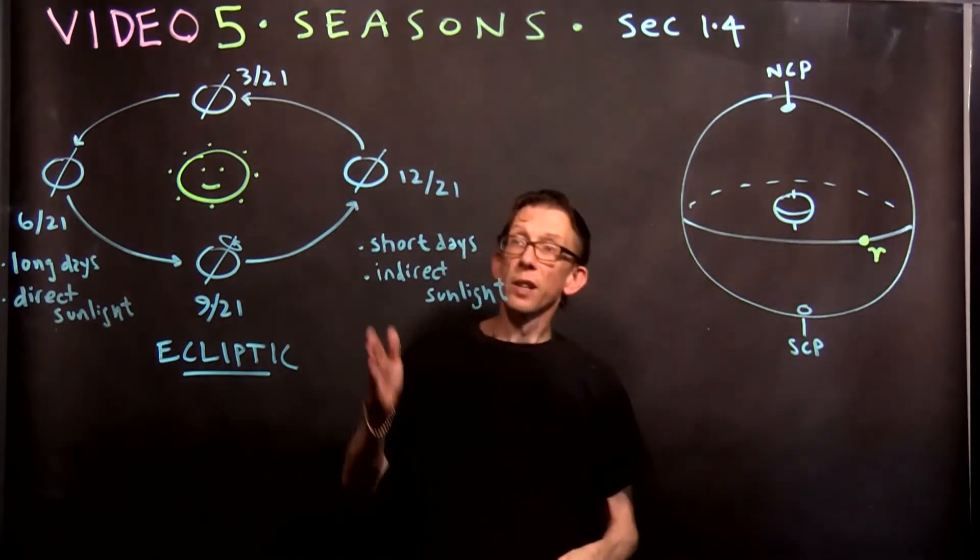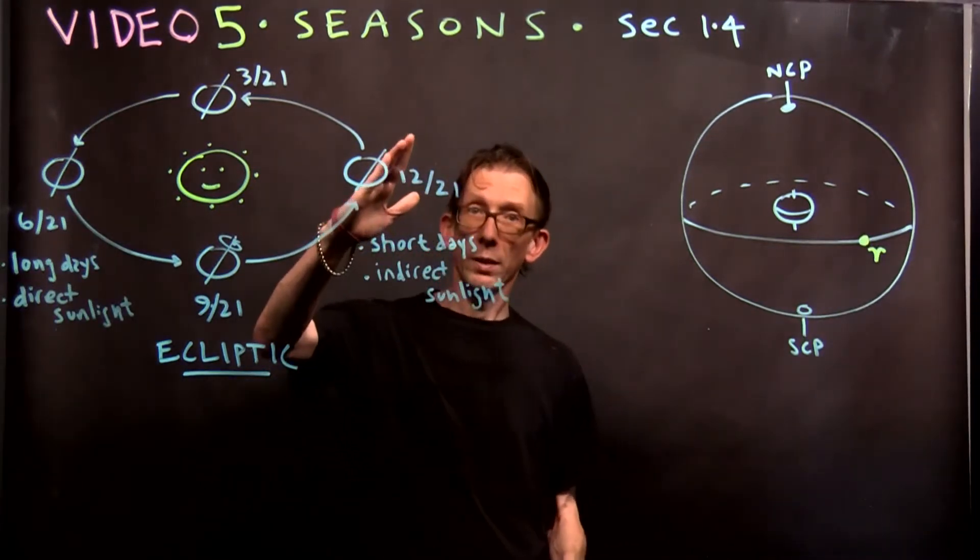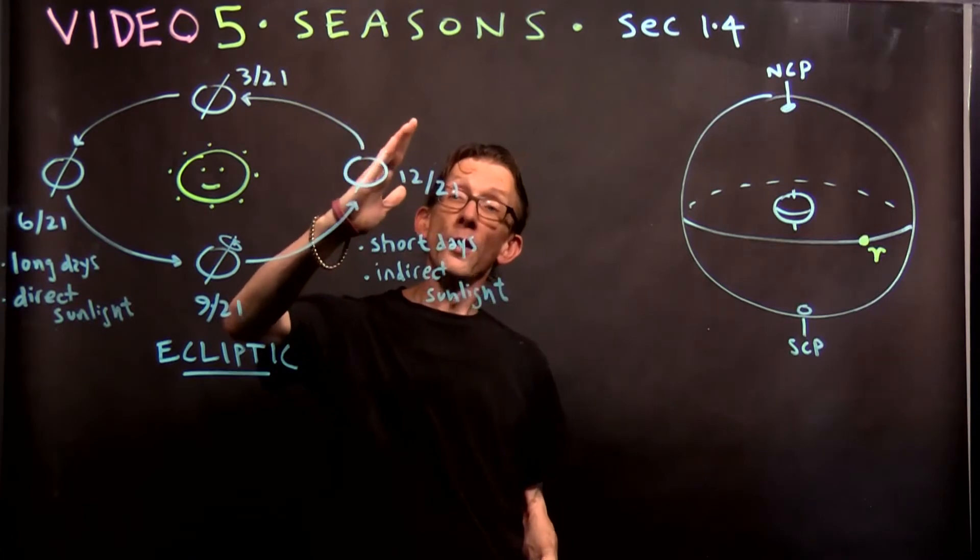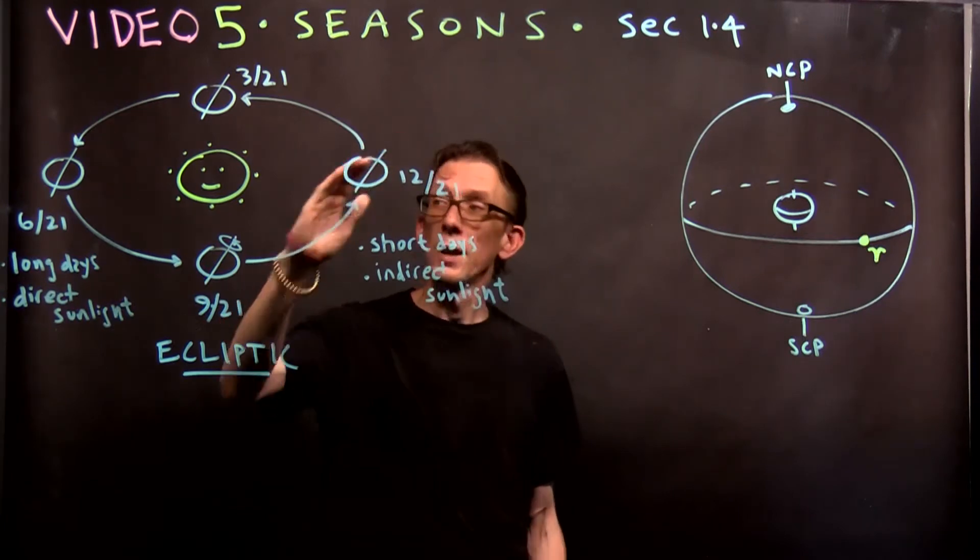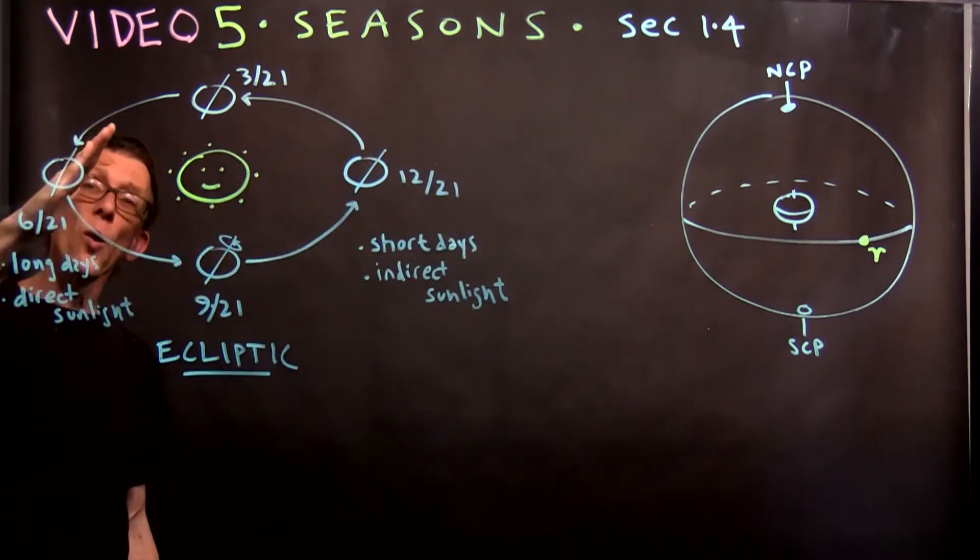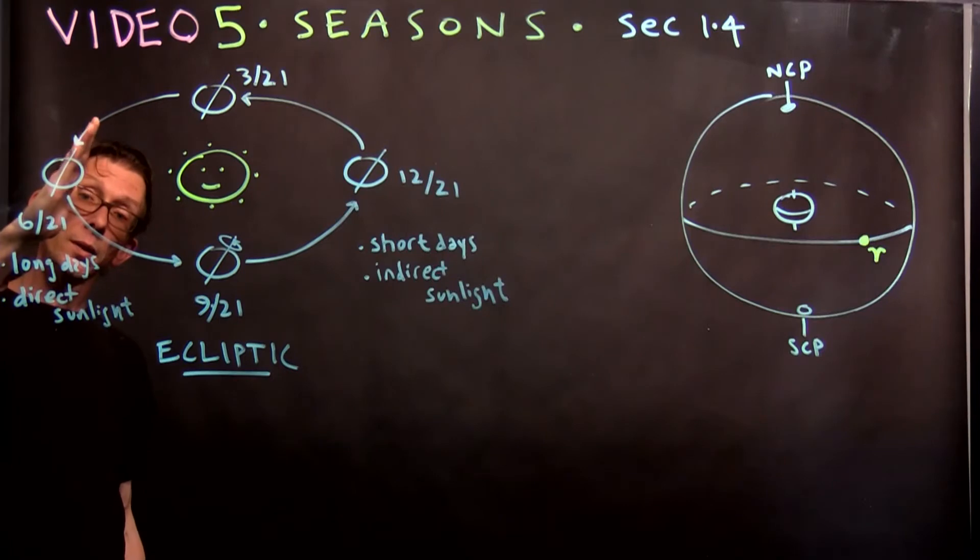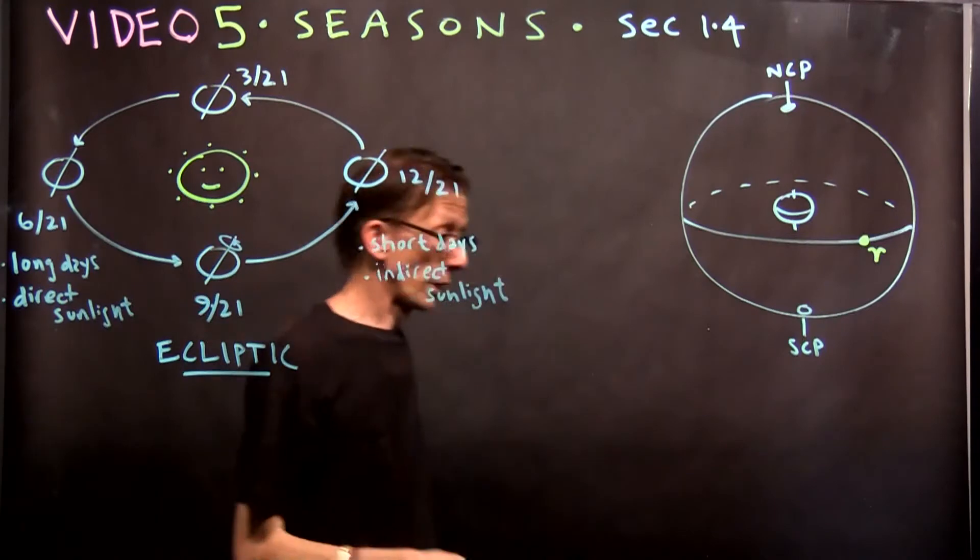Over here, in the summertime, we're approaching now the longest day of the year. Over here, we have long days. In fact, on June 21st, we have the longest day. And on December 21st, we have the shortest day. Also, we have direct sunlight. The sun is very high in the sky.